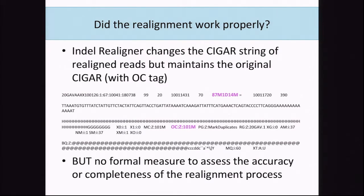After running the indel realigner, you can find where it has done work by looking through the BAM file. An OC tag records the original CIGAR string found in the original alignment by the mapper, so you can see the new CIGAR string alongside the old one and potentially go back to your original data. There is no formal measure to assess the completeness of the realignment process.